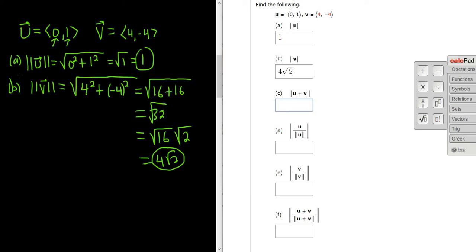Part c. Part c wants us to find the magnitude of the sum. So that means that we first have to add them up to figure out what the sum is. So u plus v. This is 0, 1 plus 4, negative 4. So how do you add vectors? Basically you just add the components, so the first one would be 0 plus 4, and the next one would be 1 plus negative 4. That's how you add vectors, you just add each of the individual pieces. So this is equal to 4 comma negative 3. Beautiful stuff.